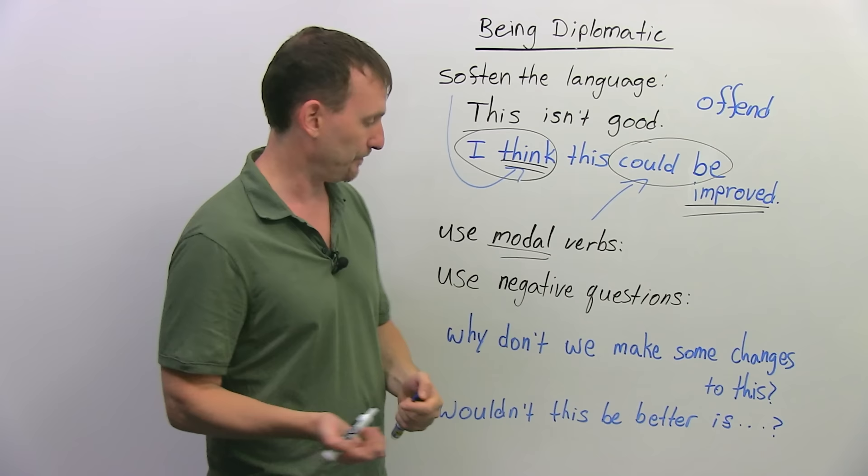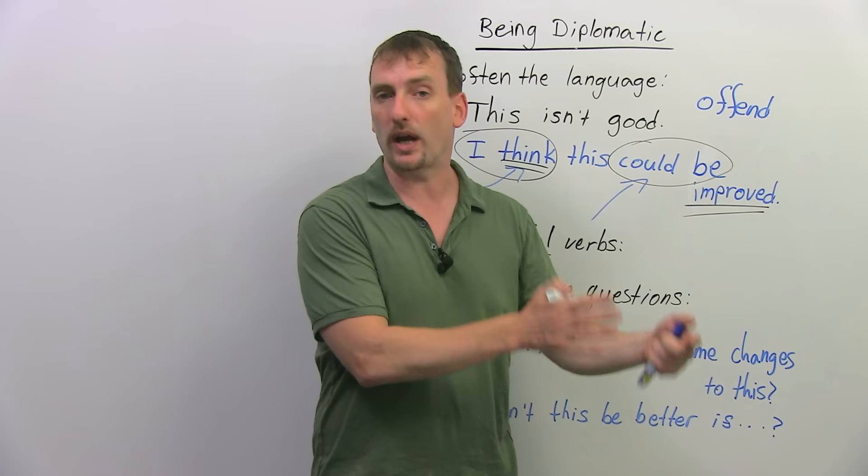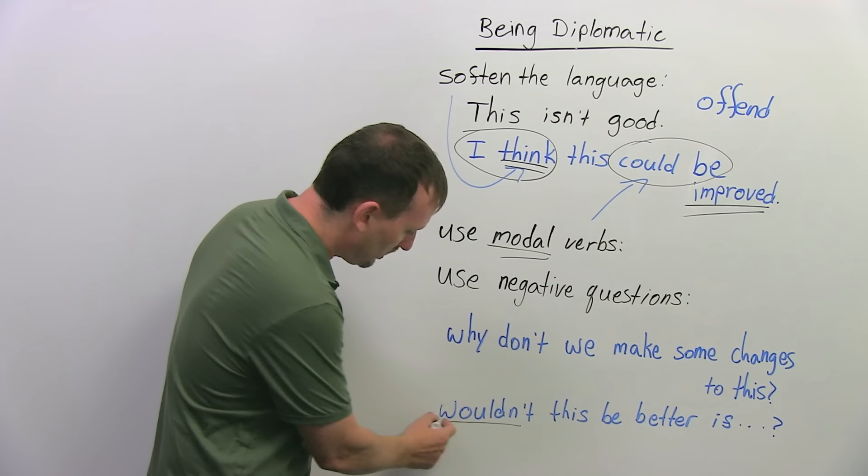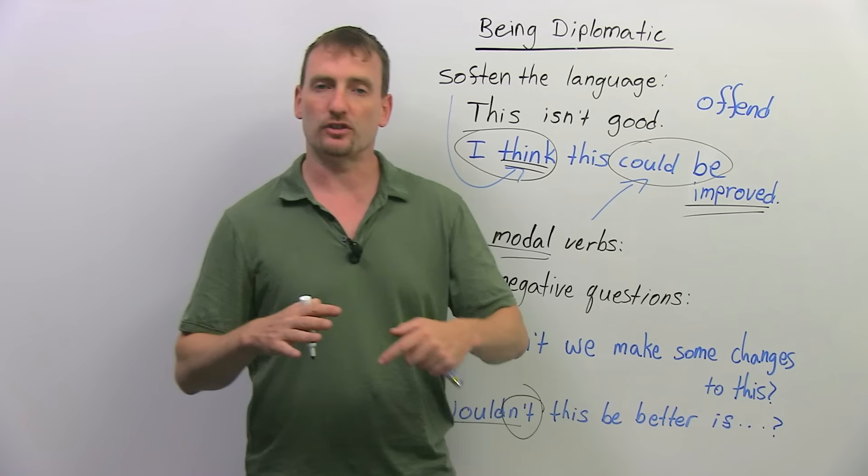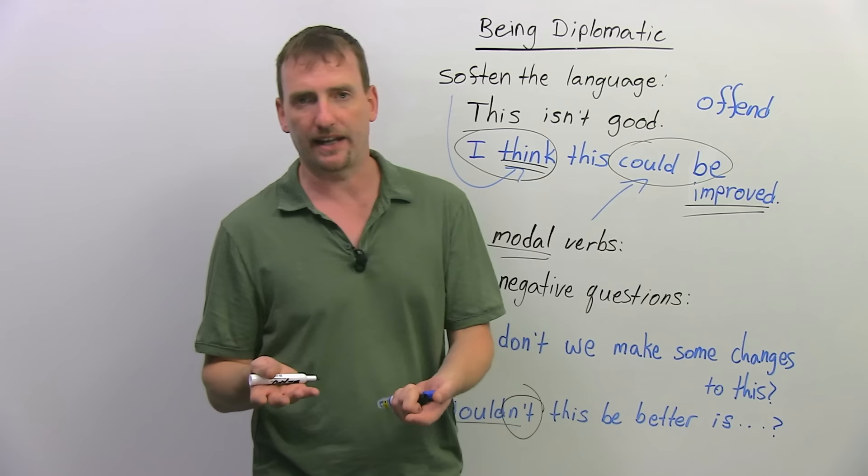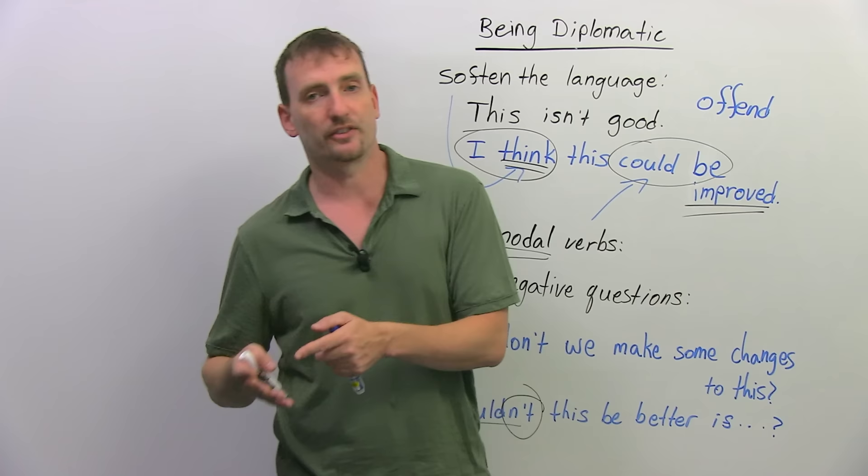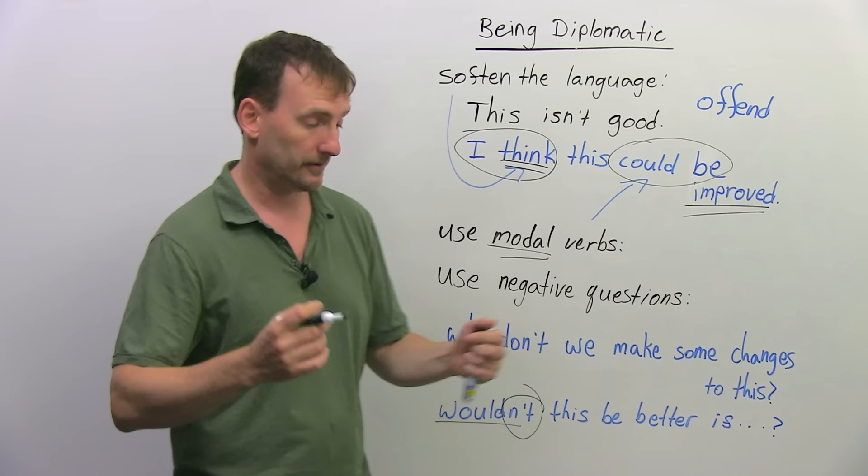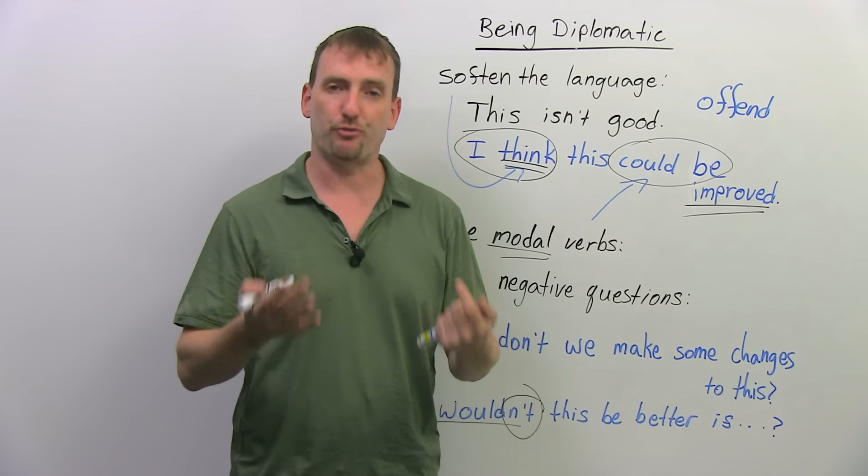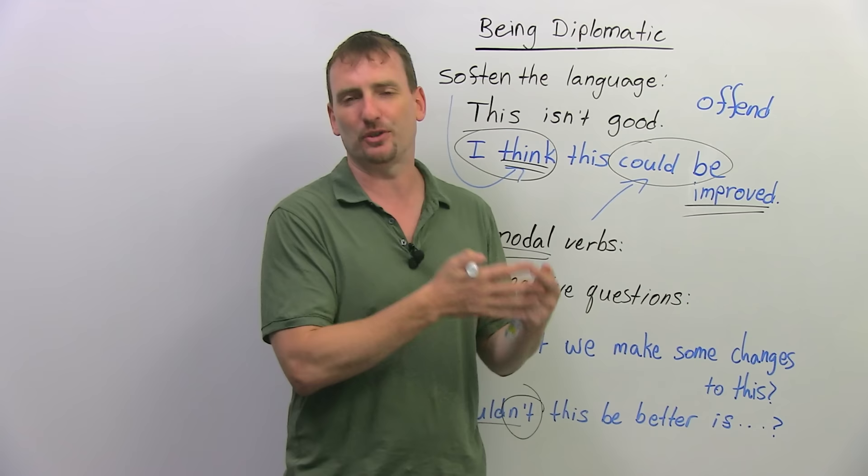But, okay, let's talk about what kind of changes we can make, how can we make this better? And then you start a dialogue and you're engaged in diplomacy. Wouldn't this be better if, right? So, again, you're going to offer an alternative, you're going to offer a different way to do something, and you're going to present it with a modal and a negative question. It makes the language softer, again, opens the door to discussion, and the person who brought you the, whatever, the plan or the design feels that you're open to listening to different ideas, you're going to offer ideas, you're going to listen to ideas, and eventually you guys, the two people together will reach some sort of agreement.